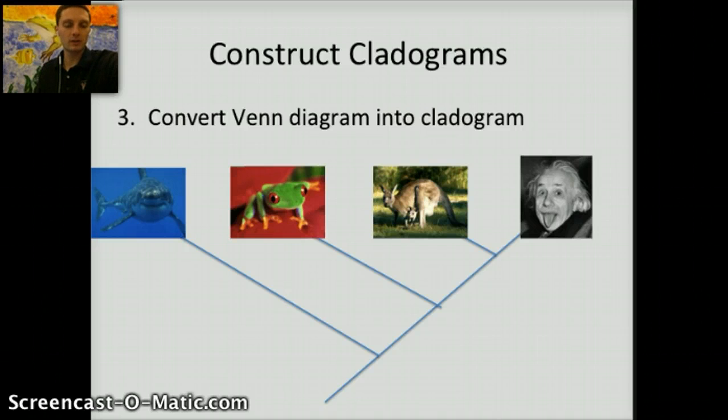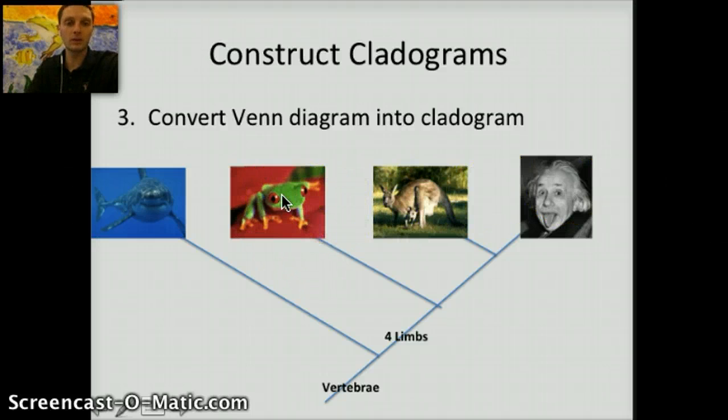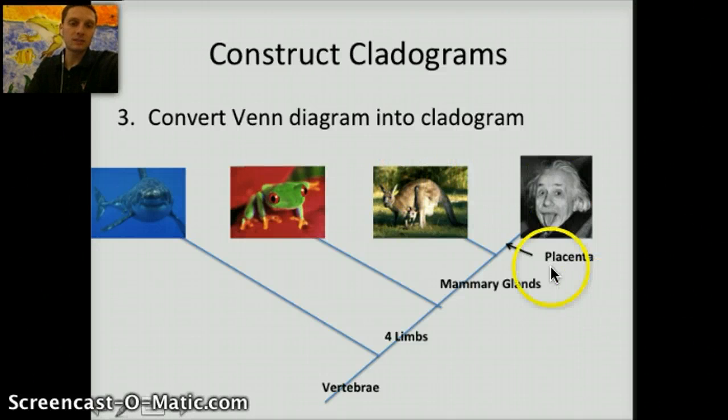To put this into a cladogram, we start by drawing a solid, single, straight line, and then branches off of that for these different species, starting with the organism that has the least amount of characteristics in our table. Then we want to add in these characteristics. The first one I would add would be vertebrae, and I'd put that outside of the line for the shark, suggesting that all of these organisms have vertebrae. Next, I'd put four limbs here, because all three of these organisms have four limbs. Third, mammary glands, both of these organisms have those, and then last, placenta.